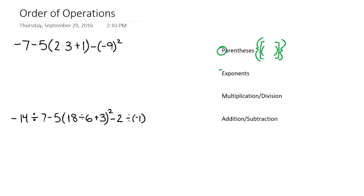The next thing we need to look at is exponents. So after we've done all of our parentheses, we move to our exponents. Now that could be a squared, a cubed, to the fourth power, fifth power, sixth power. And it also deals with square roots, cubed roots, fourth roots, or fifth roots.